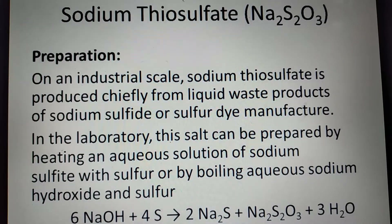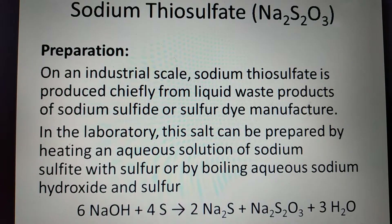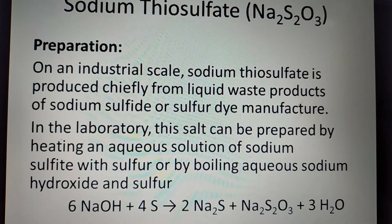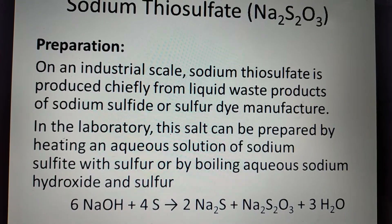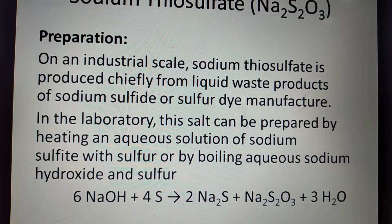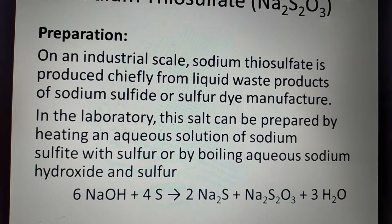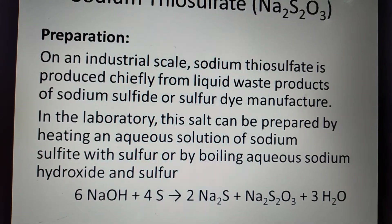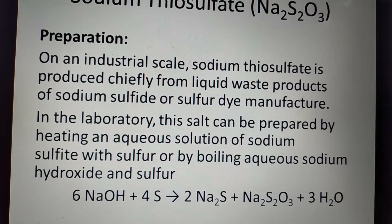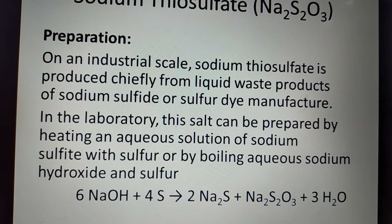Now, sodium thiosulfate — it is used in titrations, and you have conducted practical work in the lab for bleaching and iodometric titrations. On an industrial scale, sodium thiosulfate is produced chiefly from liquid waste products of sodium sulfide or sulfur dye manufacture. In the lab, it can be prepared by heating an aqueous solution of sodium sulfide with sulfur, or by boiling aqueous sodium hydroxide with sulfur.